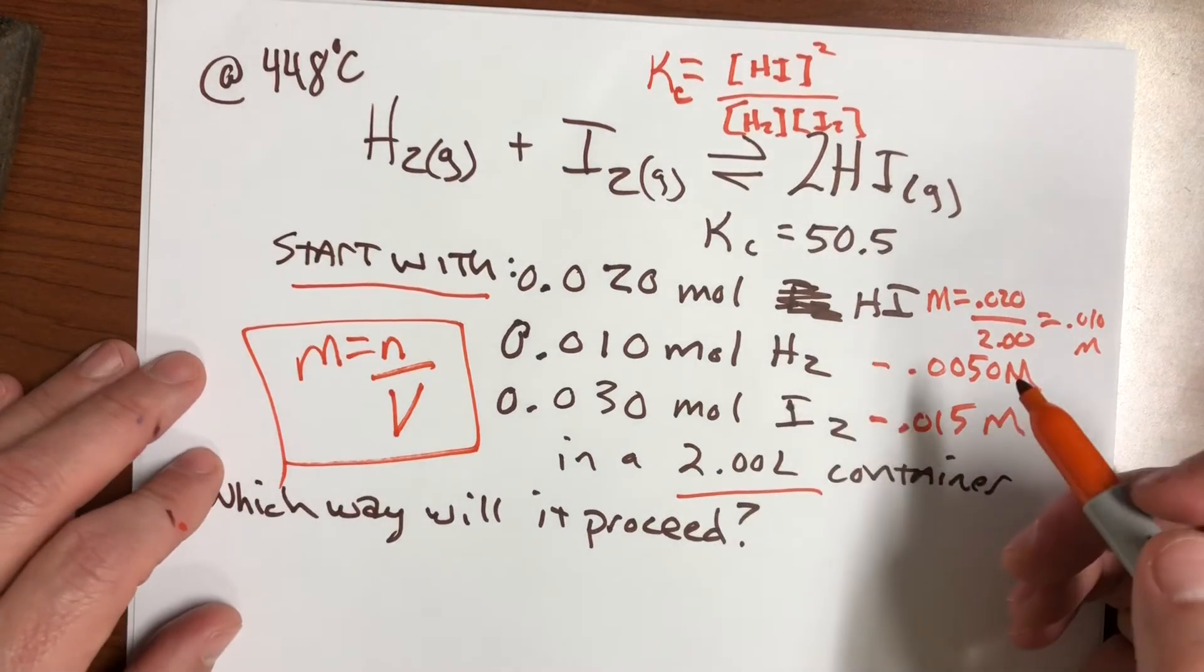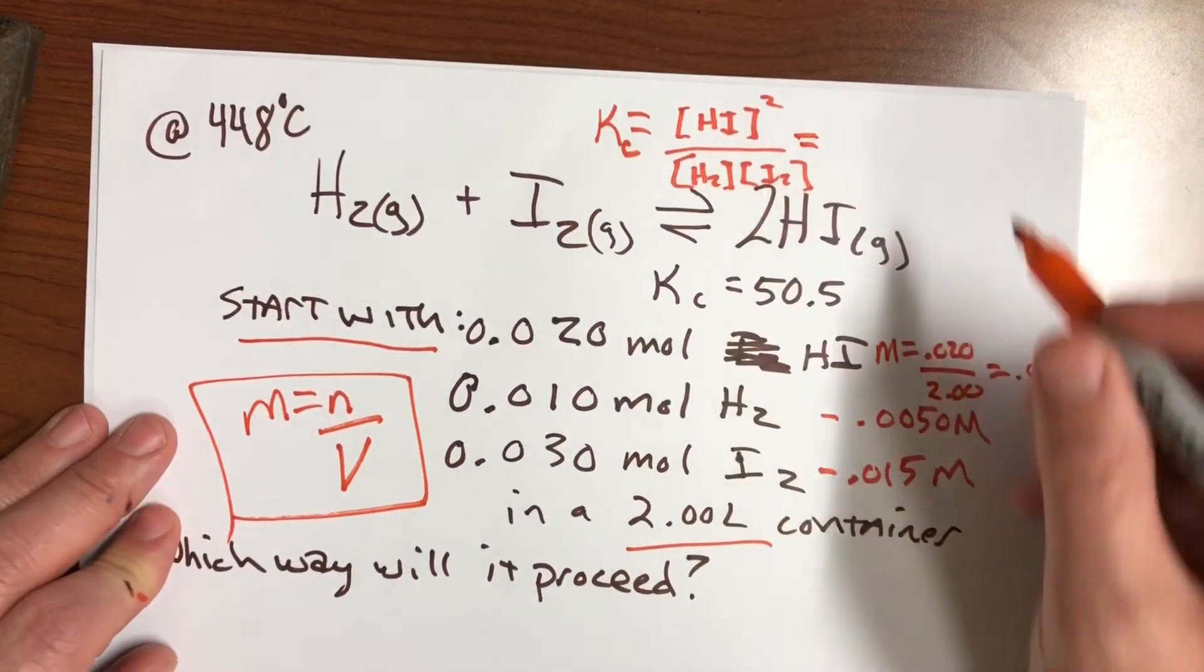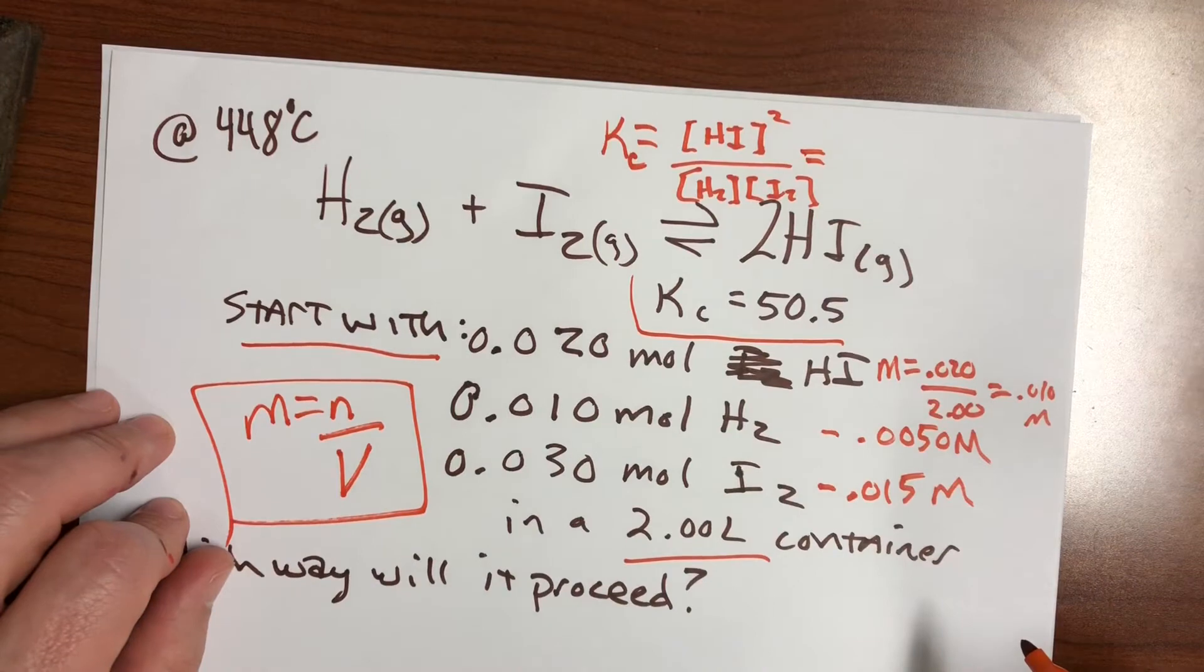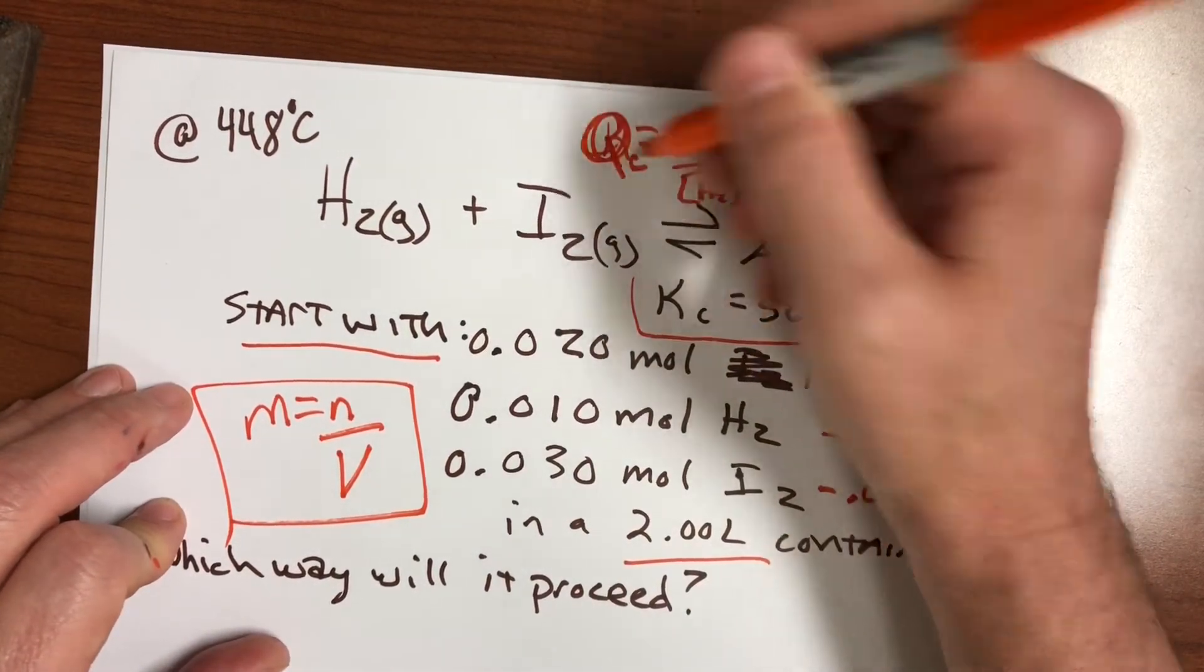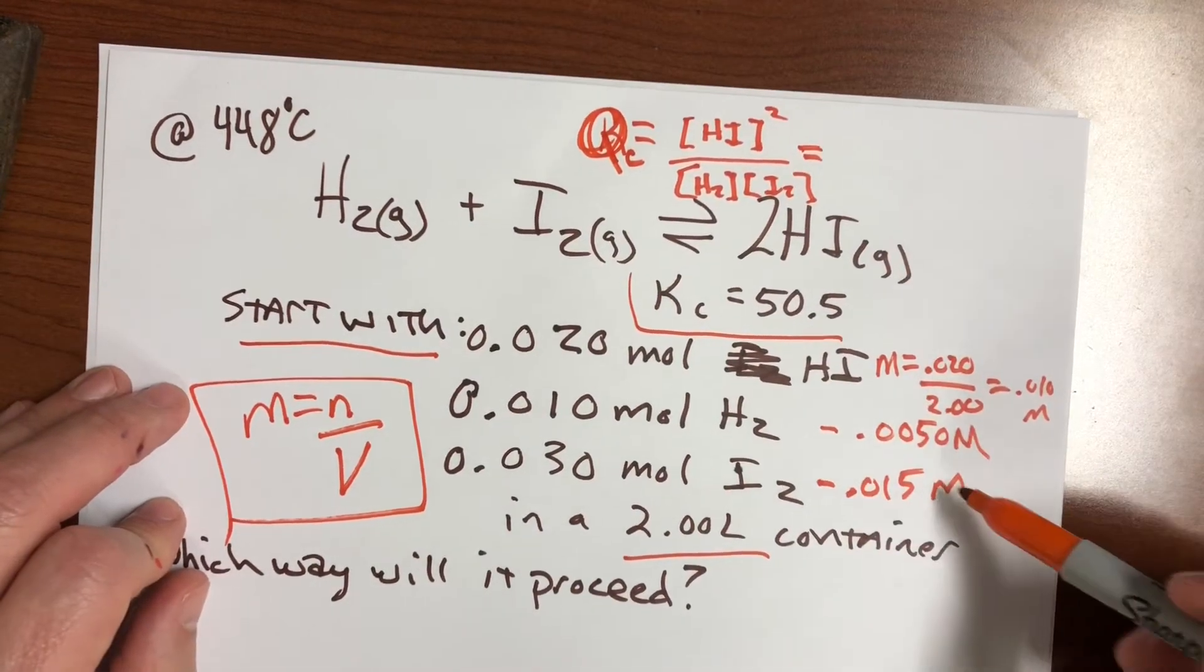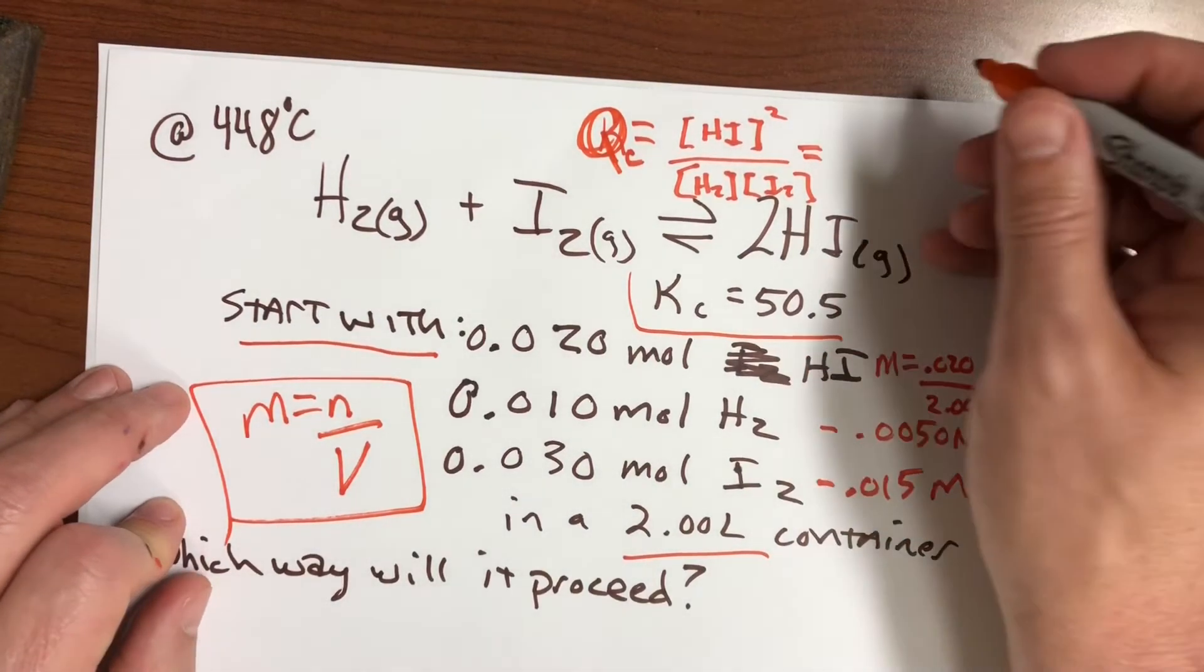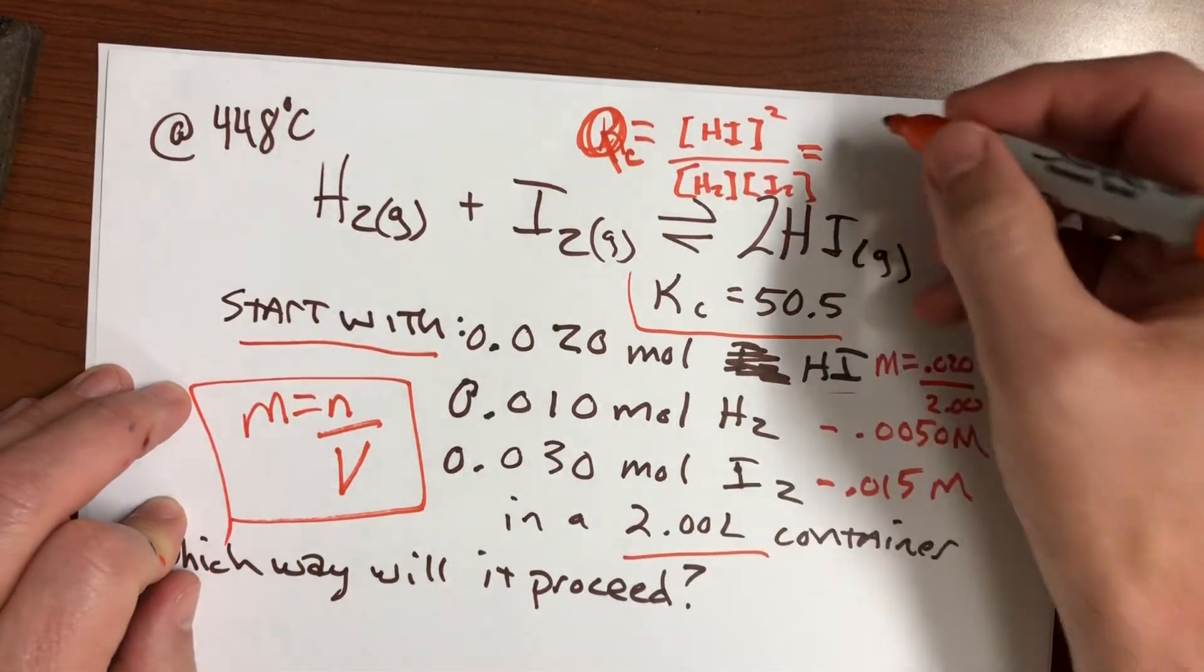So let's go ahead and plug these numbers into this expression up here. By the way, I didn't mention this, but we do have a K value for this. That's what we're going to use once we have our Q value. So I guess I should say that we're trying to calculate Q here, not K. We're trying to find what the quotient is with these numbers and then compare that to the K value to see what direction it's going to go or if it's at equilibrium.